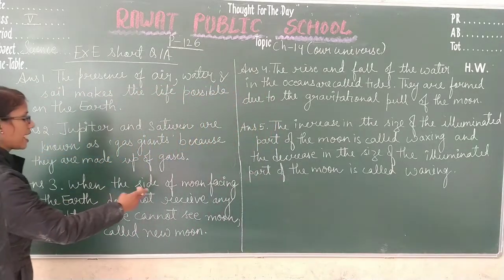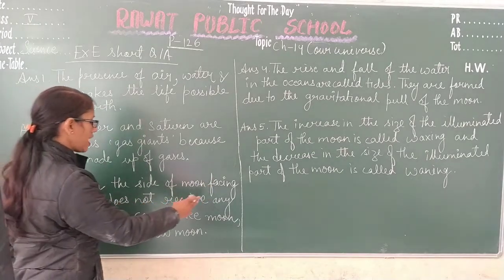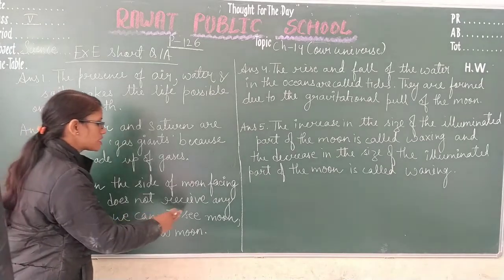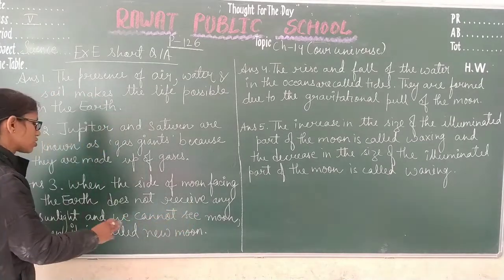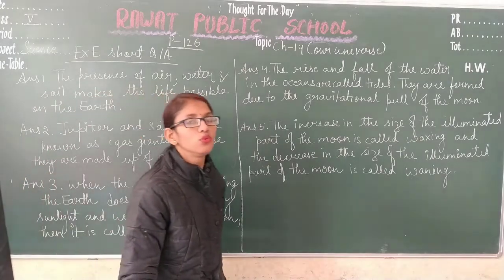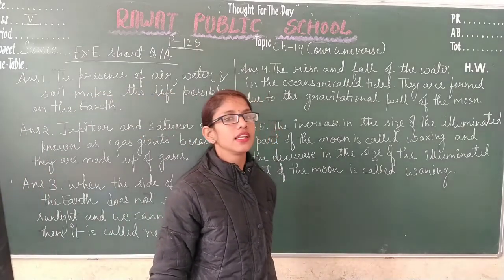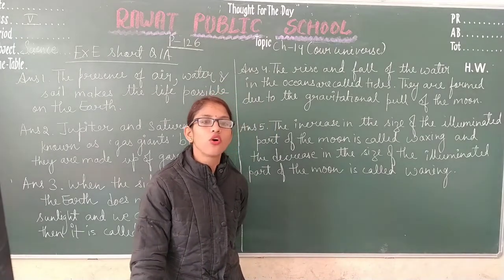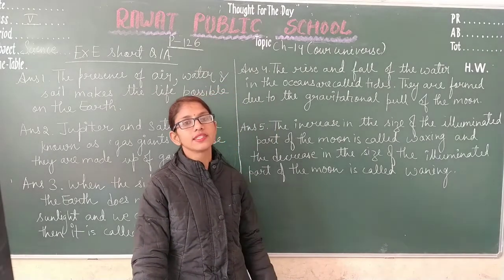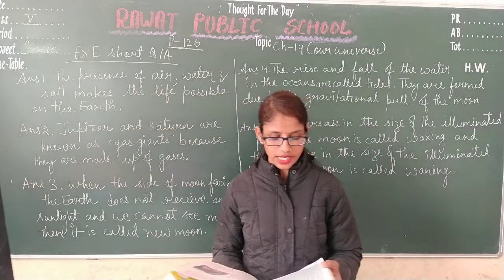The answer of question 3: when the side of the moon facing the earth does not receive any sunlight and we cannot see the moon, then it is called new moon. When the part of the moon facing the earth does not receive any sunlight, we are not able to see the moon, and that day is known as new moon day.